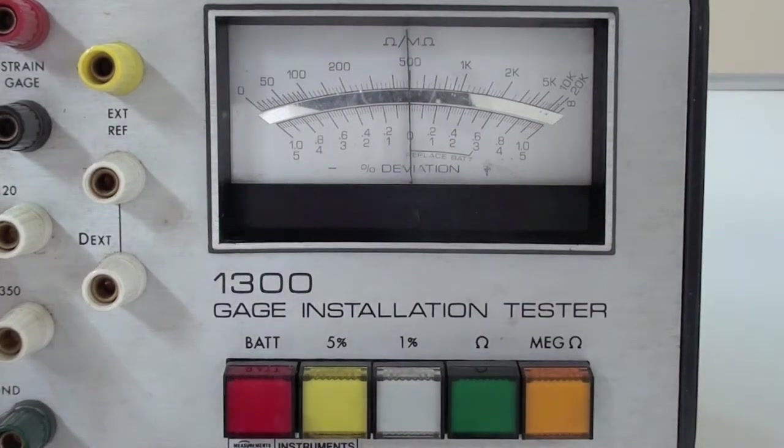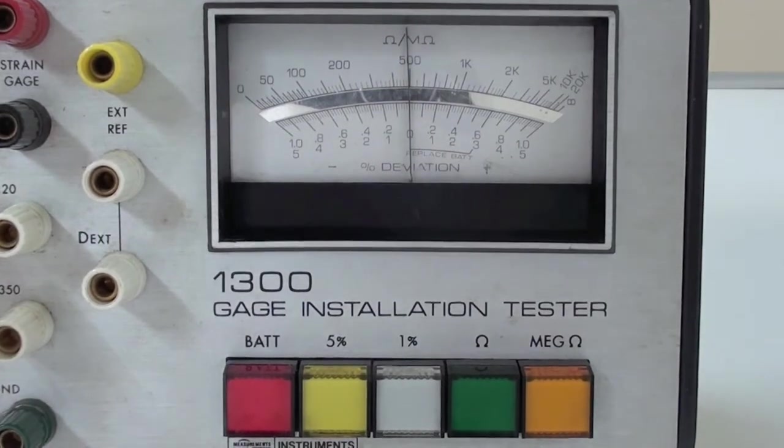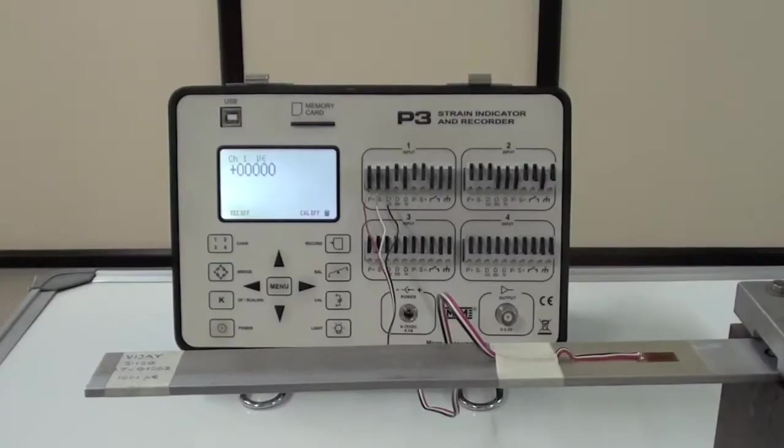The ultimate test for the quality of a good gauge bonding is during an actual test. When connected to a good strain measuring instrument such as the Model P3 from Micro-Measurements, a strain gauge should show a steady zero under no load condition that does not change with time.